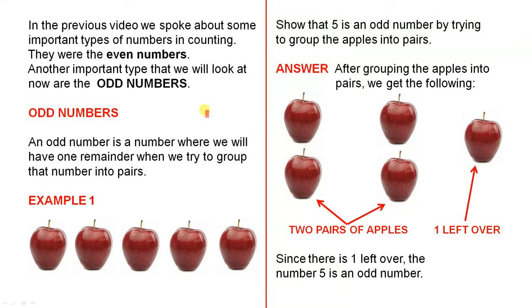Odd numbers. An odd number is a number where we will have one remainder when we try to group that number into pairs.